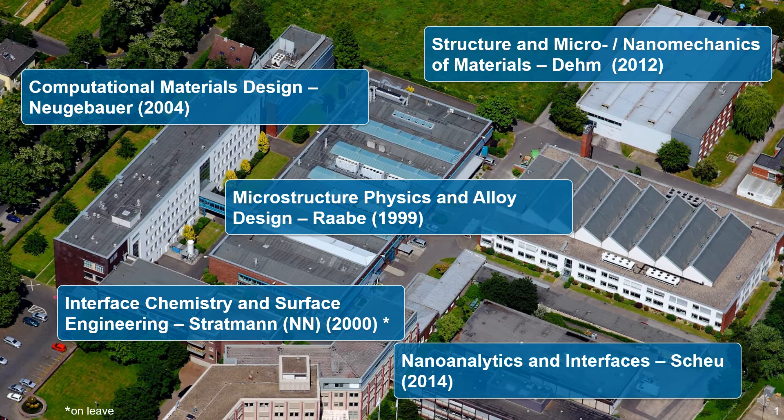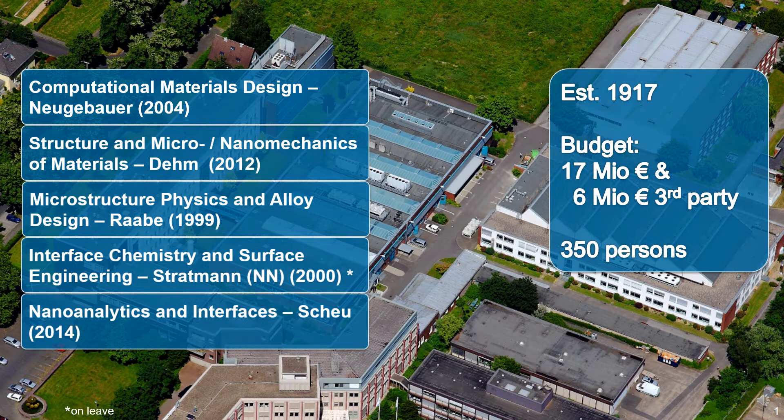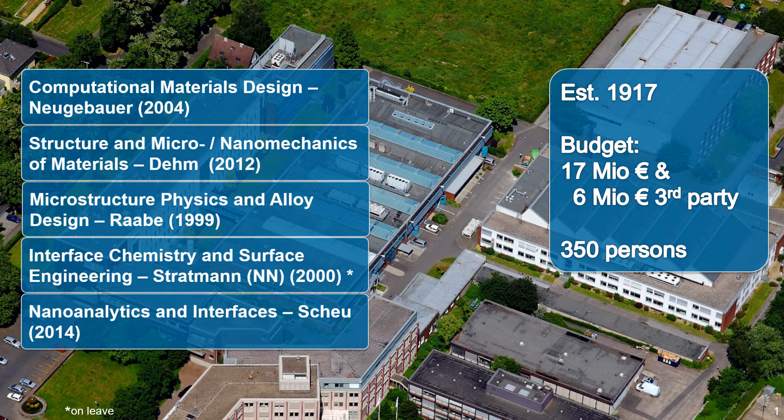We currently have four different departments and one independent group. The first department is Computational Materials Science from Professor Neugebauer. The next one is on Structure and Mechanics from Professor Dehm, also doing a lot of electron microscopy. My own department is about Microstructure Physics and Alloy Design. And we have another department by Professor Stratmann, currently headed by Michael Rohwedder on Interface Chemistry and Surface Science. And we have an independent group by Professor Scheu on Nanoanalytics and Interfaces.